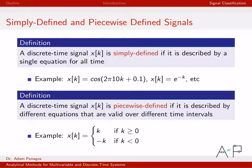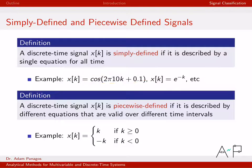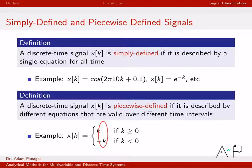Deciding if a signal is simply defined or piecewise defined is very easy. If it's a single equation, it's simply defined. If you see these brackets with multiple intervals and multiple equations corresponding to those intervals, then it's a piecewise defined signal.